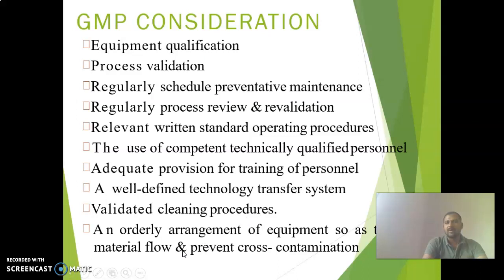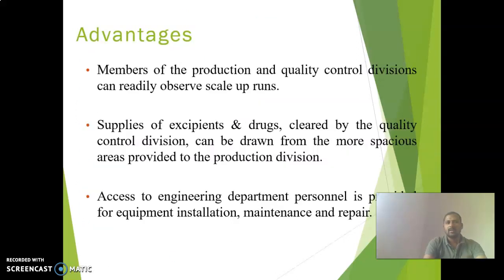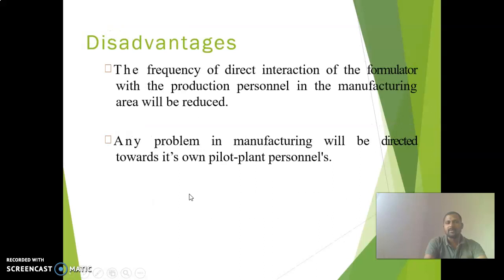Additional GMP considerations include use of competent, technically qualified personnel, adequate provision for training, a well-defined technology transfer system, validated cleaning procedures, and orderly arrangement of equipment to ease material flow and prevent cross-contamination. Advantages include that production and quality control divisions can readily observe scale-up, supplies of excipients and drug cleared by quality control can be provided to the division, and there is direct interaction of the formulator with personnel.